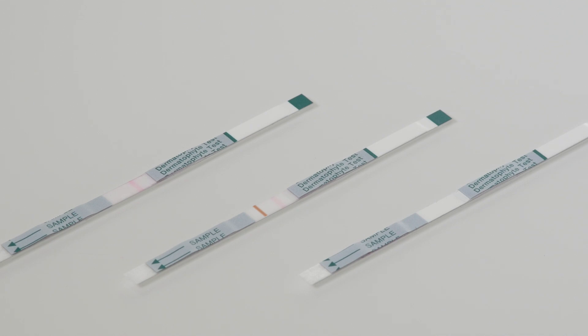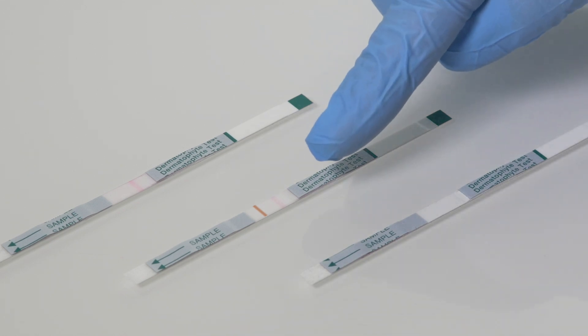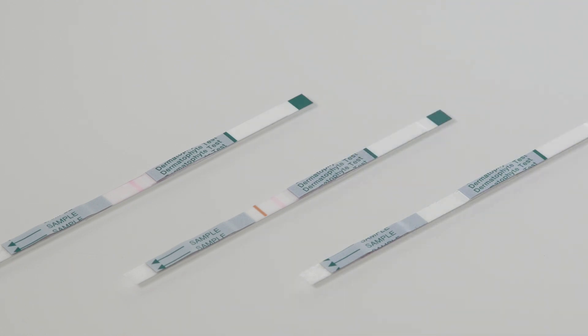The second strip shows a pink line, and just below it has a purple-brown line. This indicates the test is also successful, but there is a positive diagnosis of a Dermatophyte nail infection within this sample.